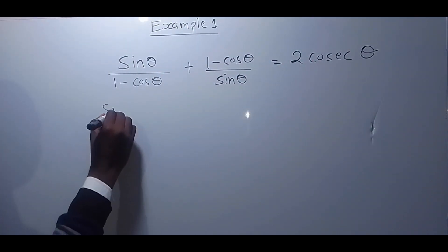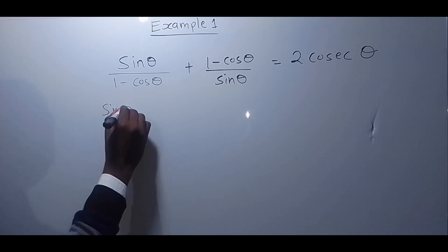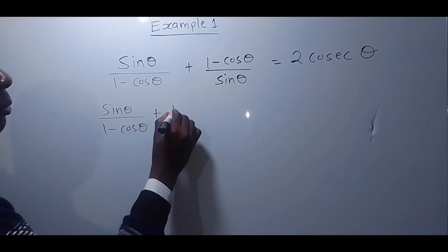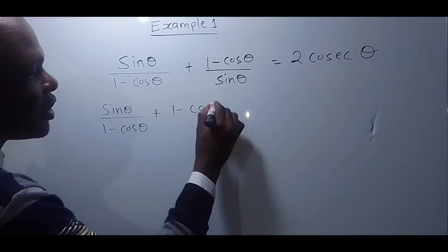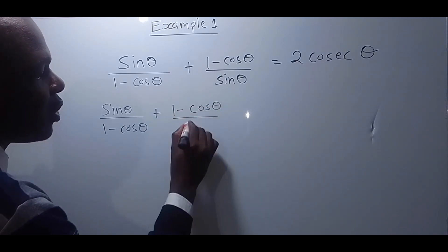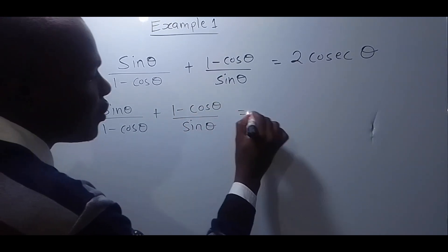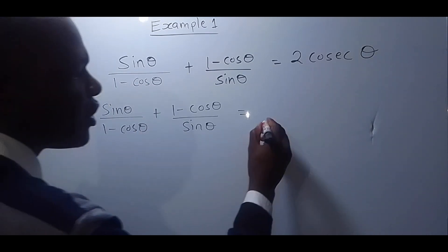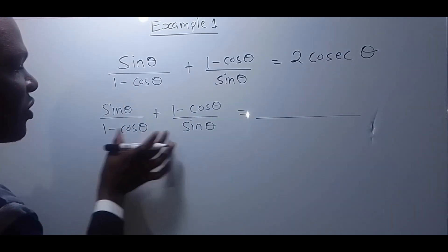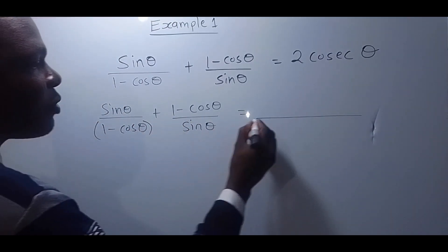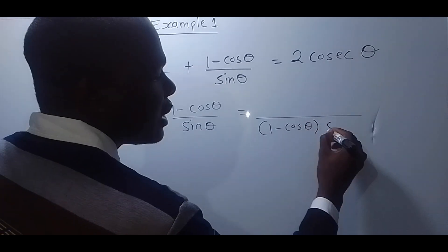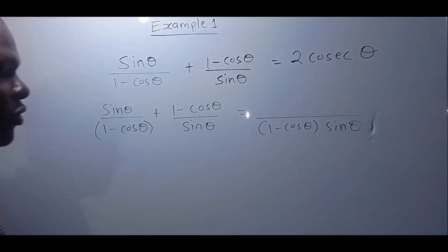On the left-hand side, we have sin theta over 1 minus cos theta, plus 1 minus cos theta over sin theta. We make this one single fraction by finding the LCM. The LCM is the product of the two denominators, that is 1 minus cos theta times sin theta.